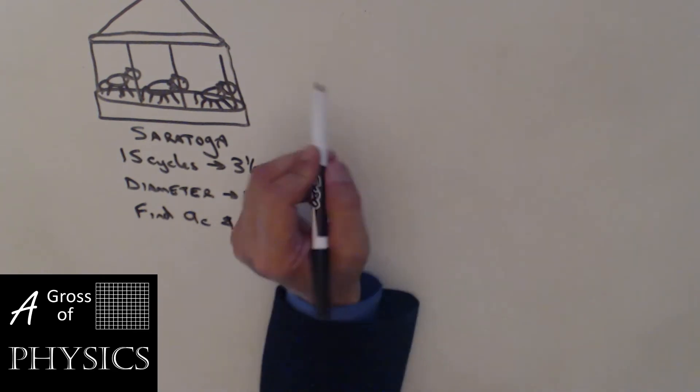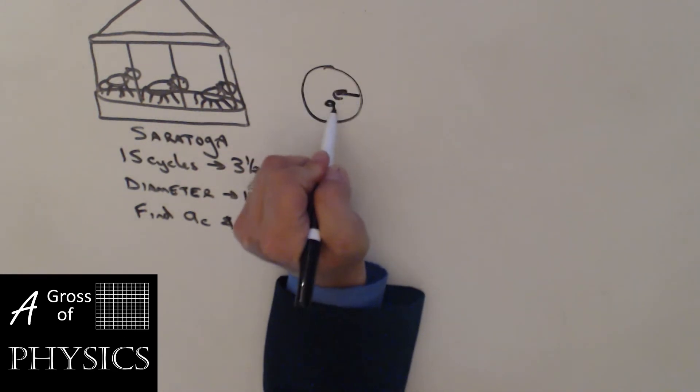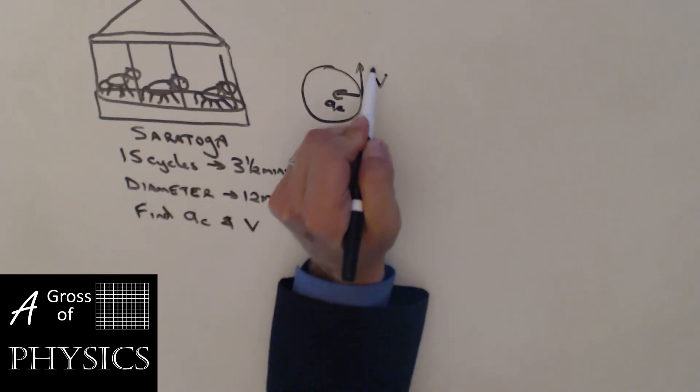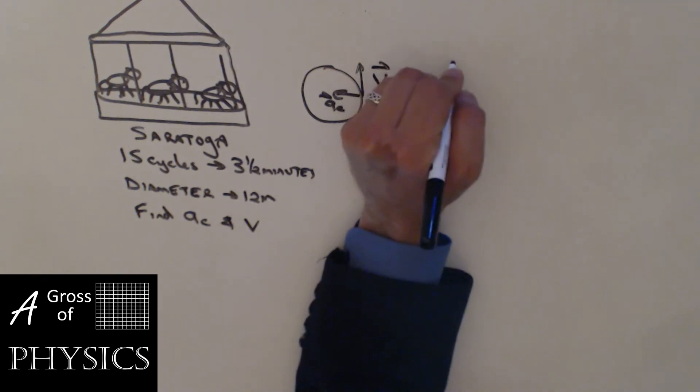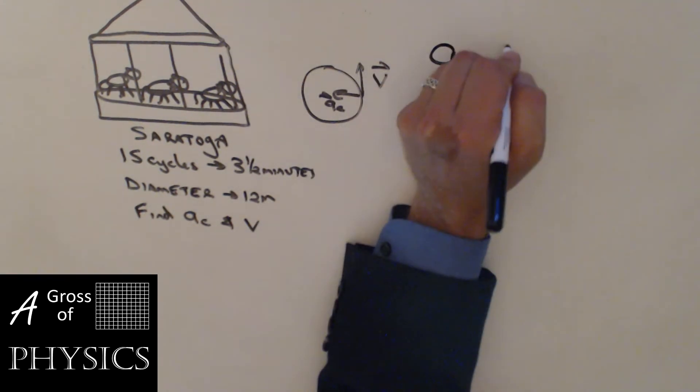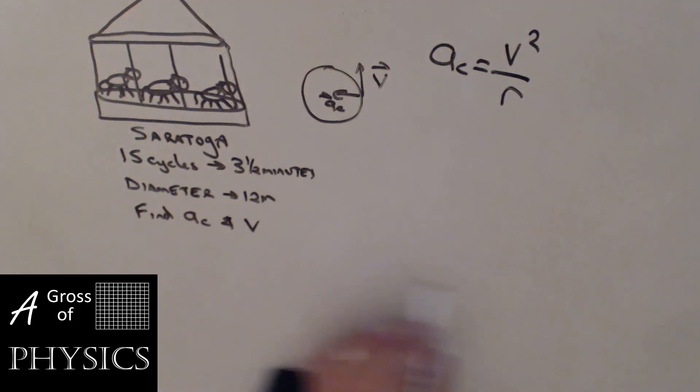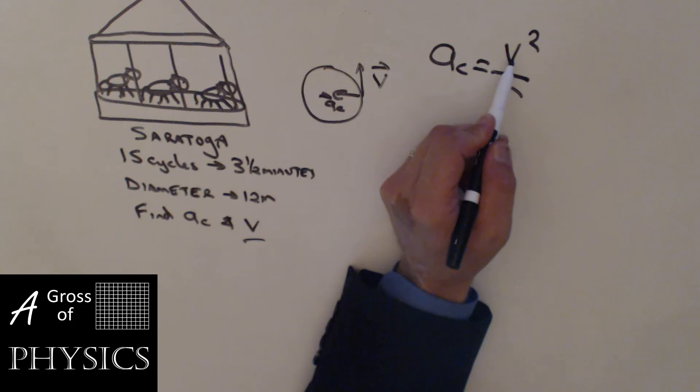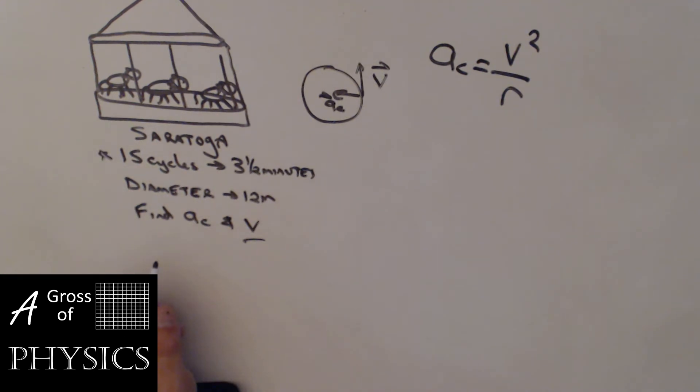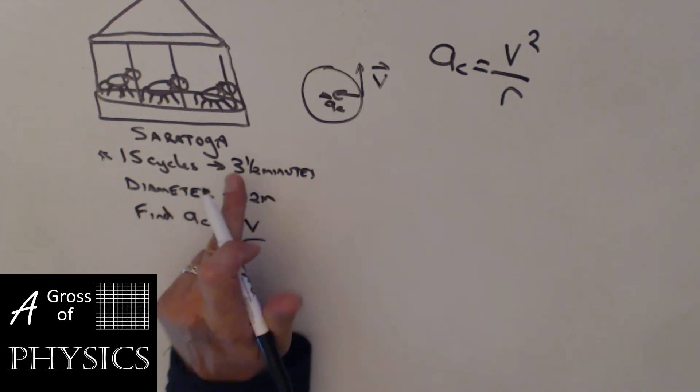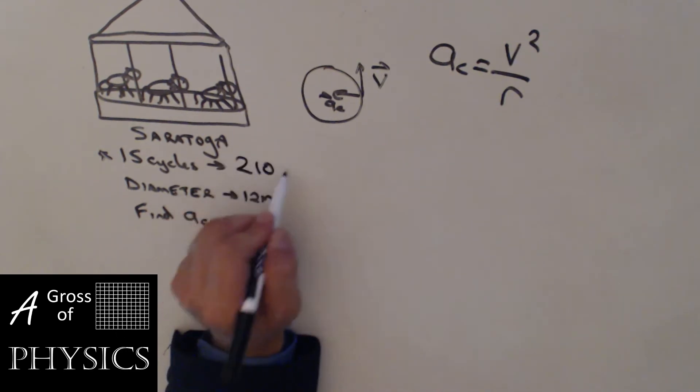Now we already know that if we're talking about a circle, the centripetal acceleration is going to be inward and the velocity is going to be tangent. So the directions are predetermined for centripetal forces and centripetal accelerations. In this case we need to determine the centripetal acceleration which as we know is v squared over r, and we're going to need to find the v. We don't have the v so that's going to be something we need to find first. Let's look at this 15 cycles in three and a half minutes. First of all, three and a half minutes is three times 60 and then another 30, so it's 180 plus 30, which should be 210 seconds.